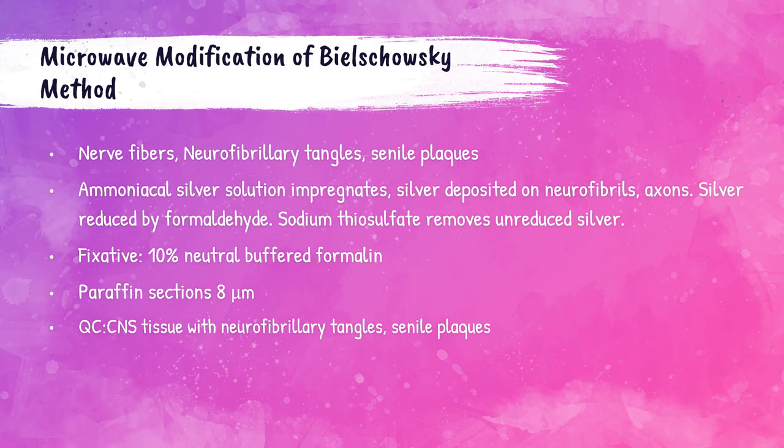The microwave modification of the Bielschowsky method is used to demonstrate nerve fibers, neurofibrillary tangles, and senile plaques. Ammoniacal silver solution impregnates the tissue, silver deposits on neurofibrils and axons, and the silver is reduced by formaldehyde in the developer's solution. Sodium thiosulfate removes any unreduced silver. Fix in 10% NBF, cut at 8 microns; QC tissue should be CNS tissue containing neurofibrillary tangles and senile plaques.